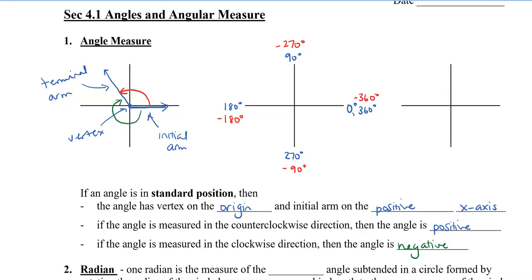Now, I want to teach you a new measure, and we'll fill in the last grid afterwards. When we label our grids, we talk about the quadrants. So, this will be quadrant 1, this is quadrant 2, quadrant 3, and this will be quadrant 4.